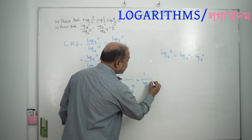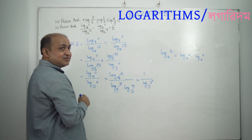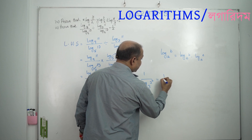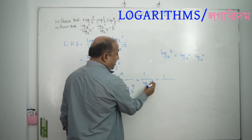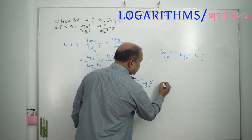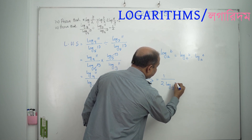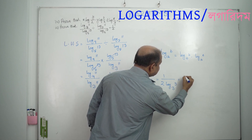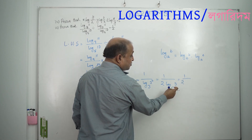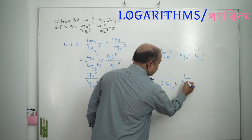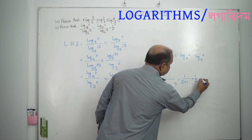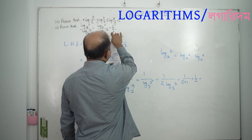3 squared, 3 squared — using the power formula: 1 divided by 2, with base 3, argument 3. So 1 divided by 2 equals one half.